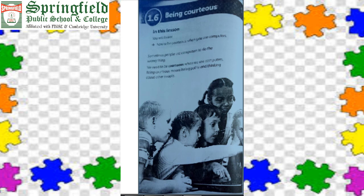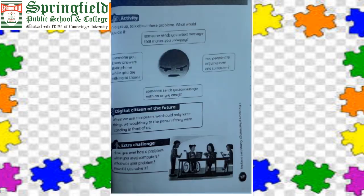In this chapter's group activity, talk about these problems: What would you do if someone sends you a text message that makes you unhappy? What if someone you know answers their phone while you're talking to them? What if two people are arguing over one computer? What if someone sends you a message with an angry emoji? Discuss these situations with your elders or parents and find solutions.